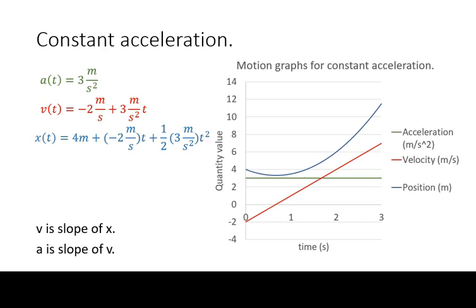When the velocity has a positive value, the position graph will have a positive slope.